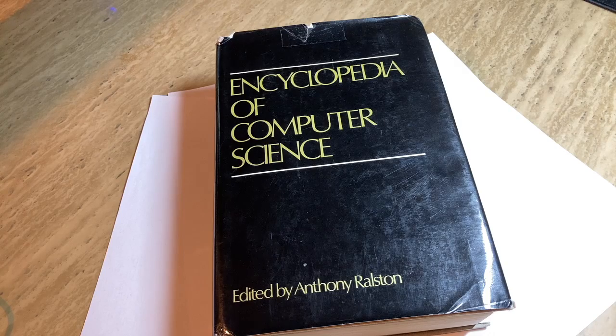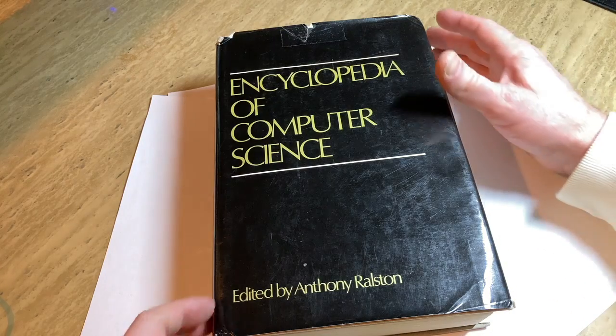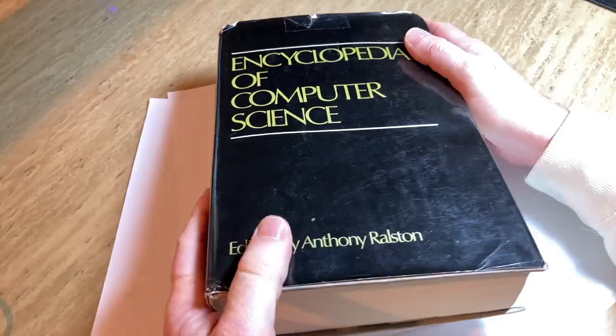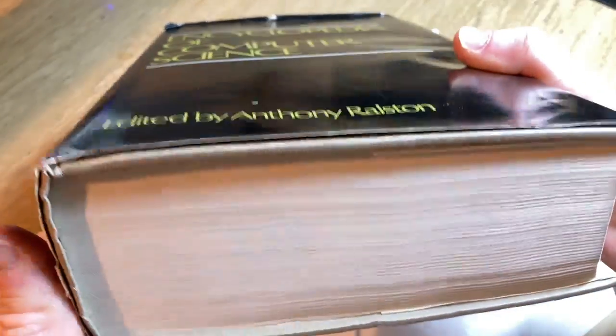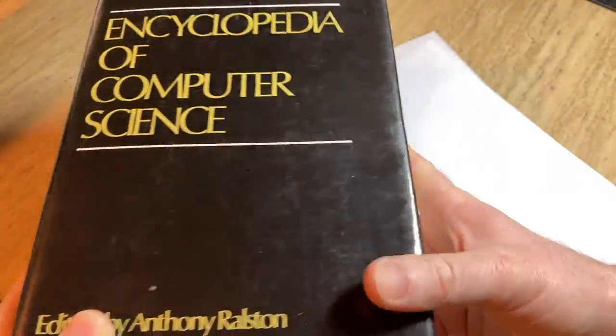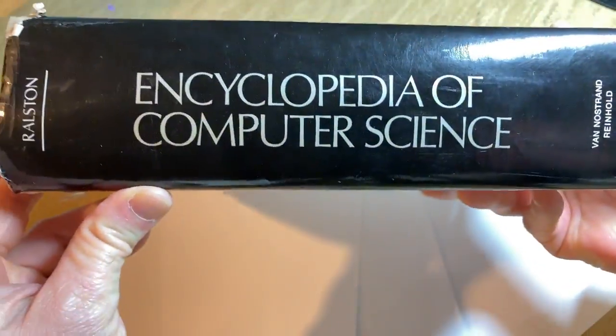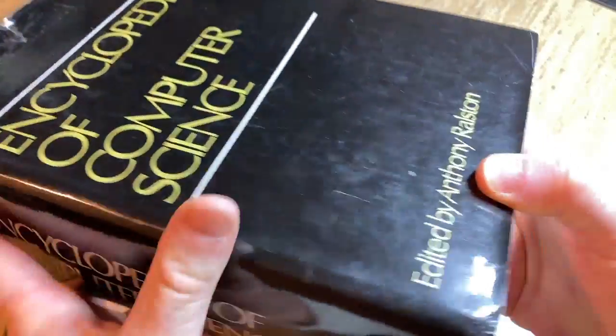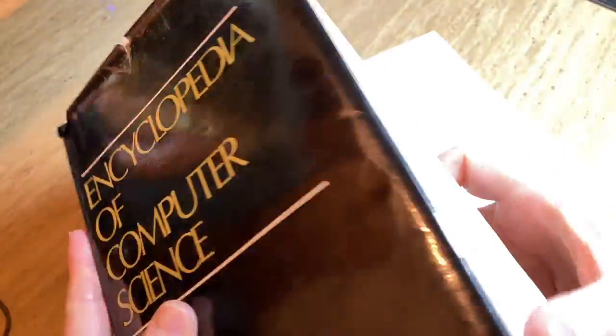Hello, in this video I want to show you a ridiculously big computer science book. I think this is the biggest computer science book in the entire world. Look how thick that is. It is humongous. This is thicker than the thickest calculus book. It's thicker than Stewart's calculus. Encyclopedia of Computer Science. What a behemoth of a book.